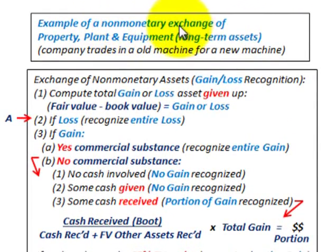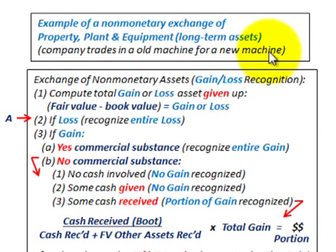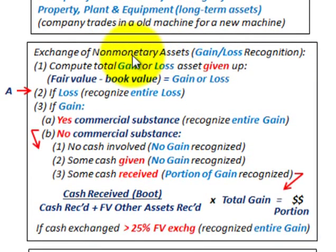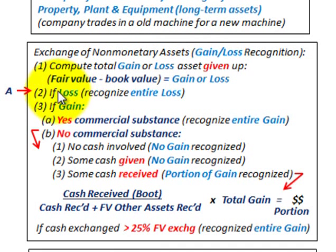Here we're going to be going through an example of a non-monetary exchange of some property, plant, and equipment, or some long-term assets. Our example is going to be where a company trades in an old machine for a new machine, and there's also going to be some cash exchanged. We would start with our exchange rules here for non-monetary assets, and I'm not going to go through them all — you can use them as a reference.